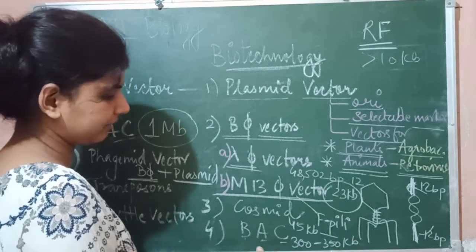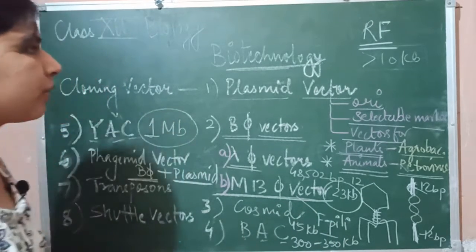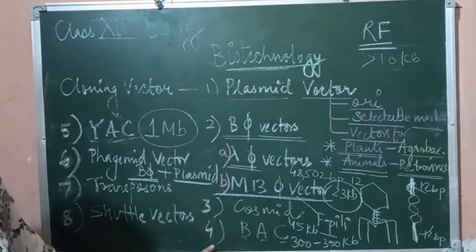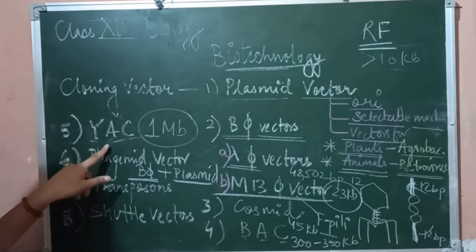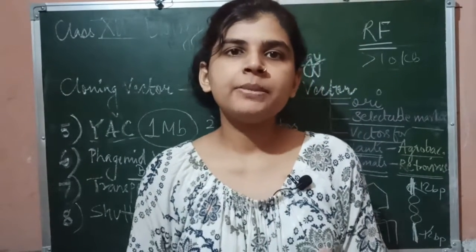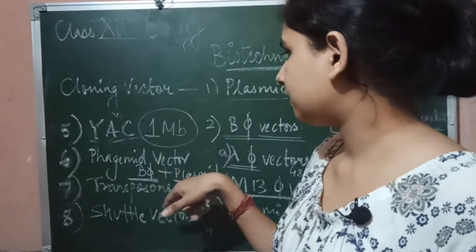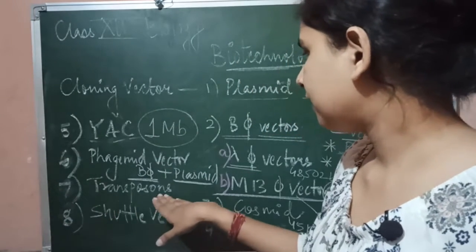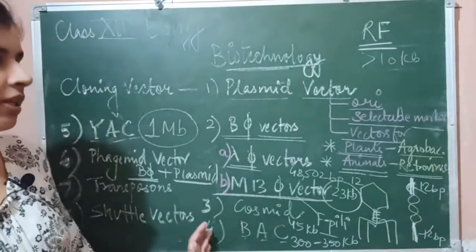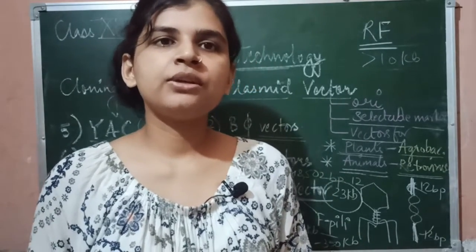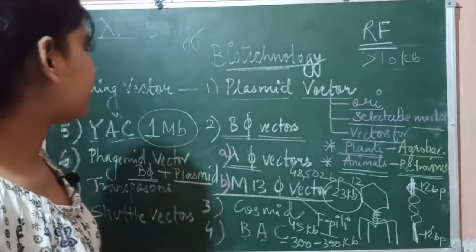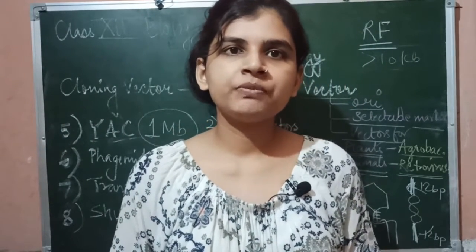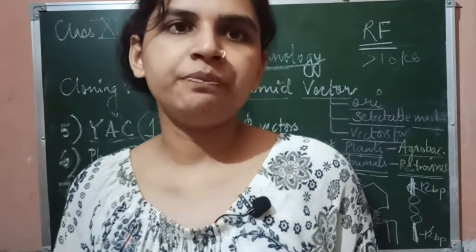Then we covered cosmids — cosmid equals phage cos sites plus plasmid DNA — and in cosmids we can insert up to 45 kb of DNA. The fourth cloning vector was the Bacterial Artificial Chromosome (BAC), which can carry 300 to 350 kilobase pairs. Then we discussed the Yeast Artificial Chromosome (YAC), which can insert up to one megabase pair of DNA. We also covered phagemid vectors (bacteriophage plus plasmid), transposons as moving elements used as cloning vectors, and shuttle vectors — which have both prokaryotic and eukaryotic zones with two selectable markers. An example is the yeast episomal plasmid.